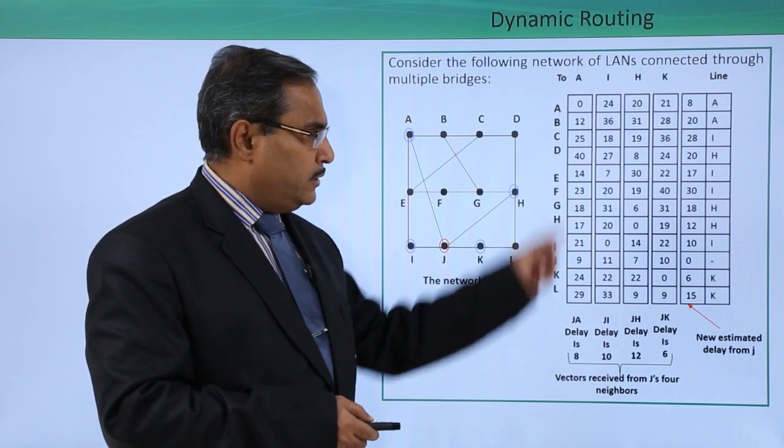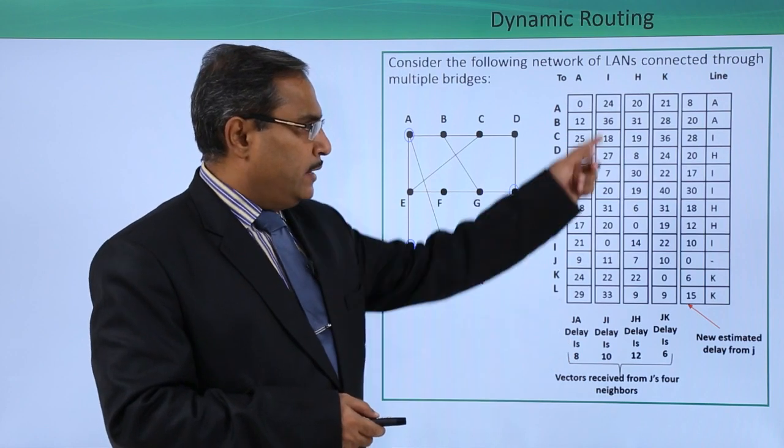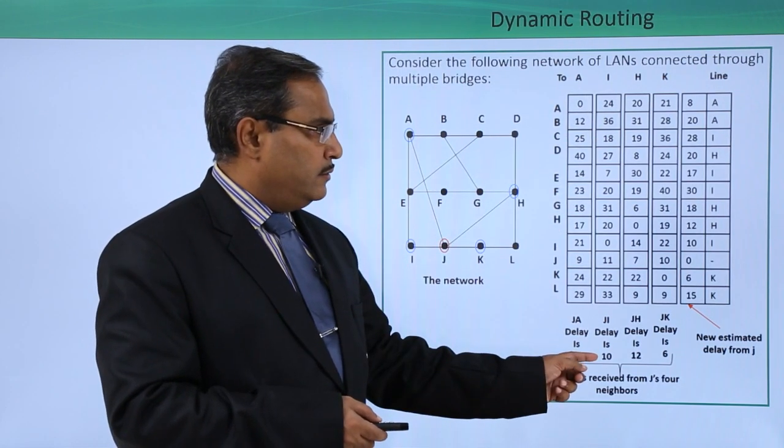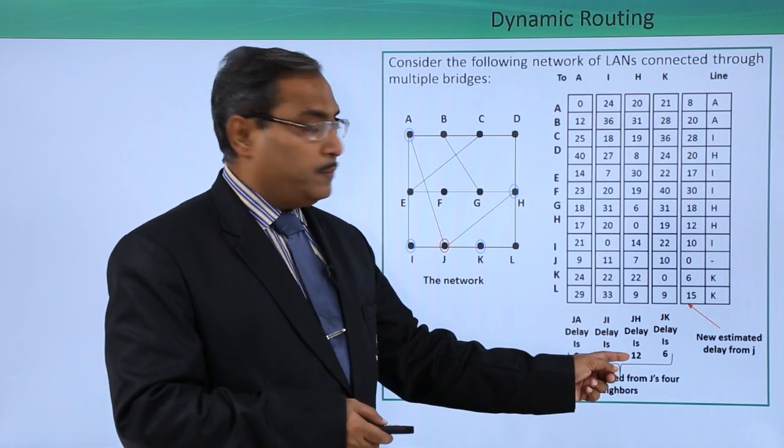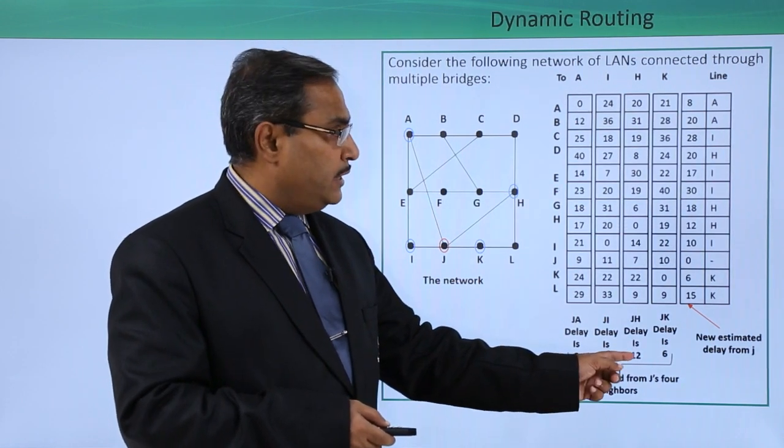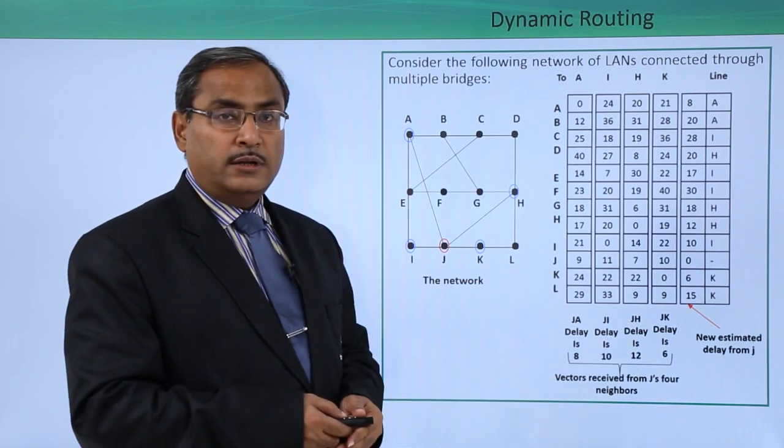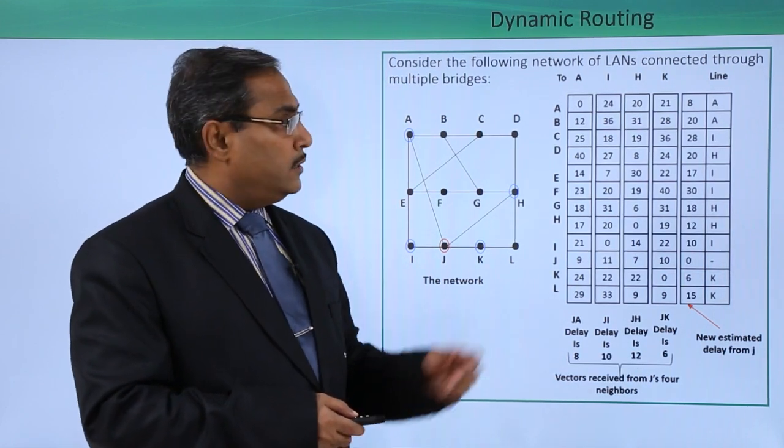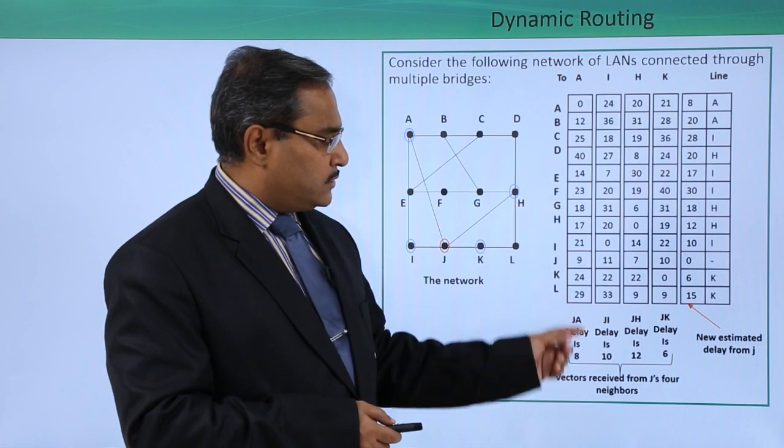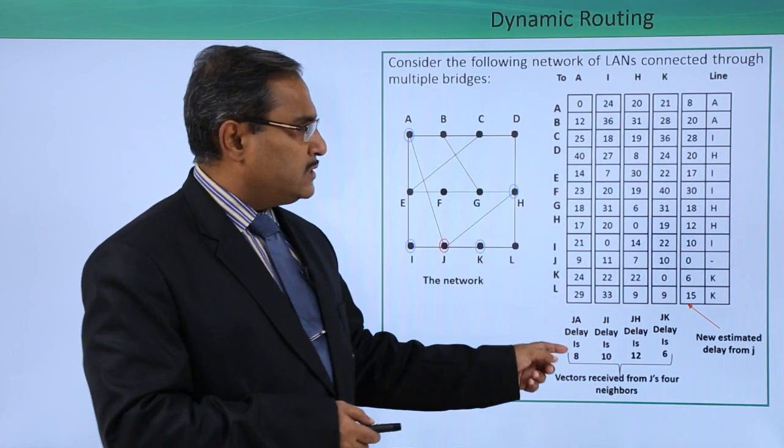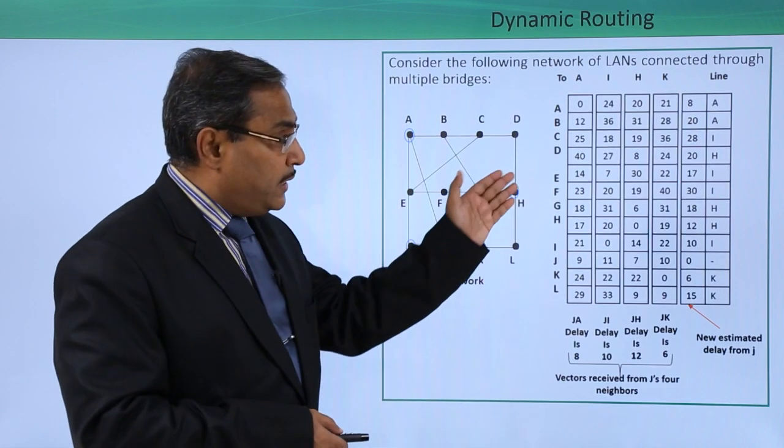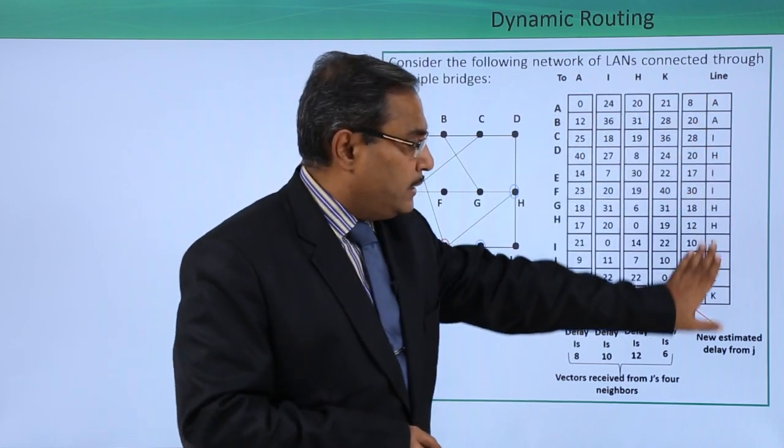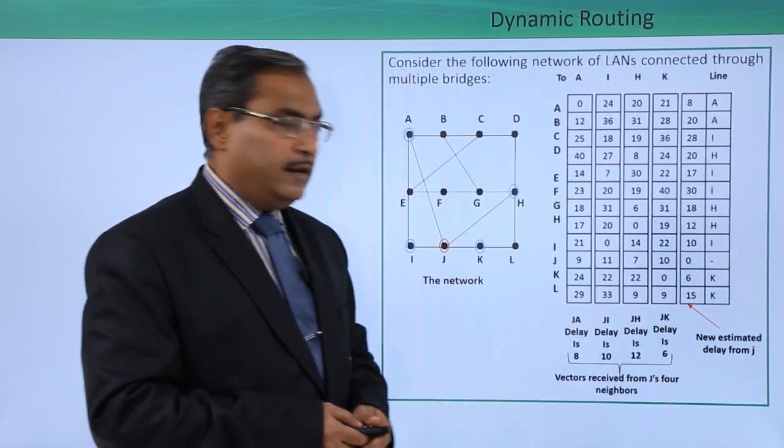12 plus 8 is 20, 36 plus 10 is 46, 31 plus 12 is 43, 28 plus 6 is 34. Now just consider which is the minimum one - that was 20. So 20 through A. In this way, J is forming its routing table. This is the new estimated delay from J.